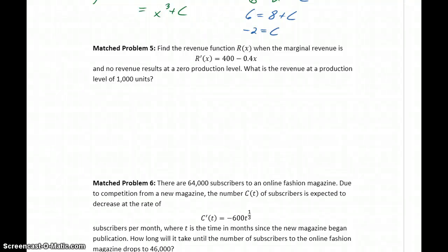Match problem 5 is similar to match problem 4. We're given the derivative of our revenue function, so the marginal revenue function. What we want to do is use this information to find our actual revenue function so that we can determine what's our revenue at a production level of 1,000 units.